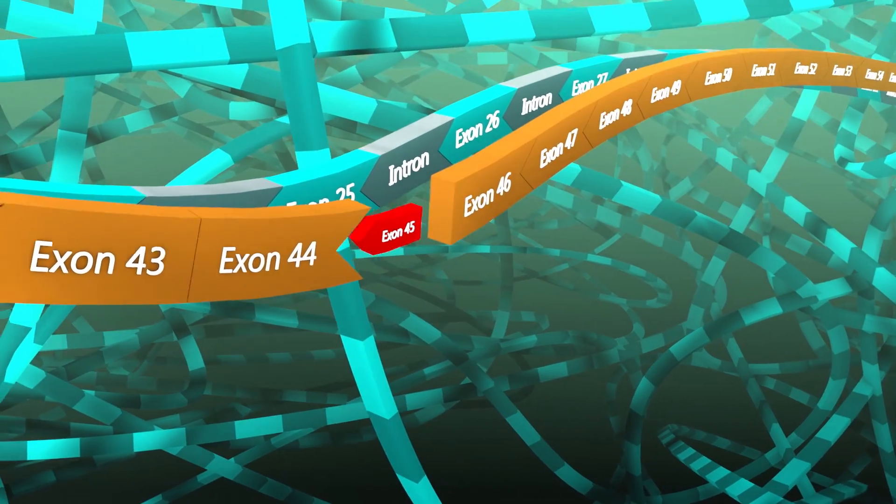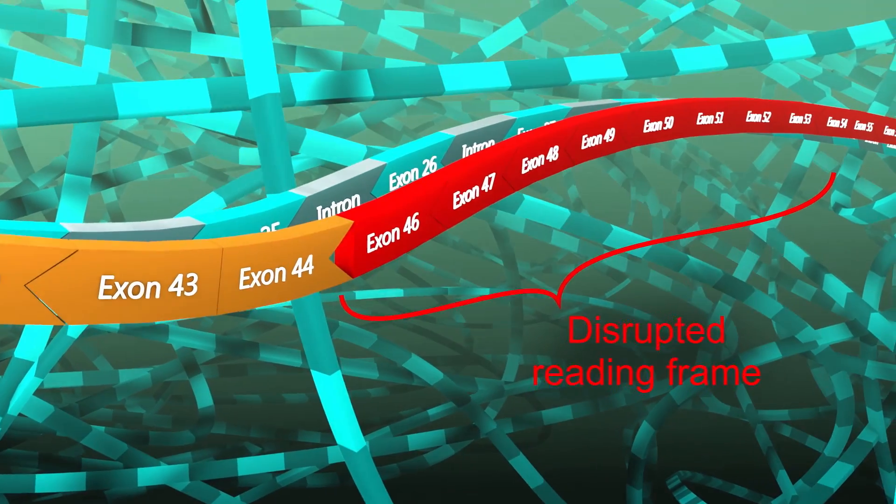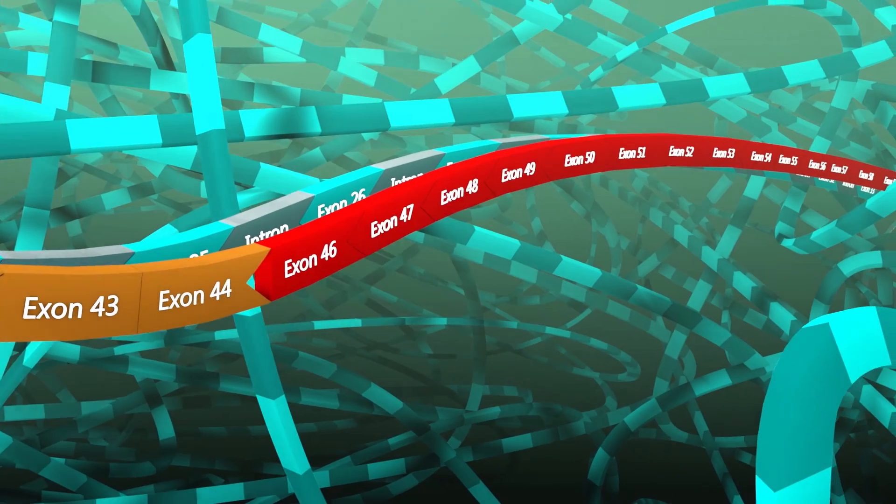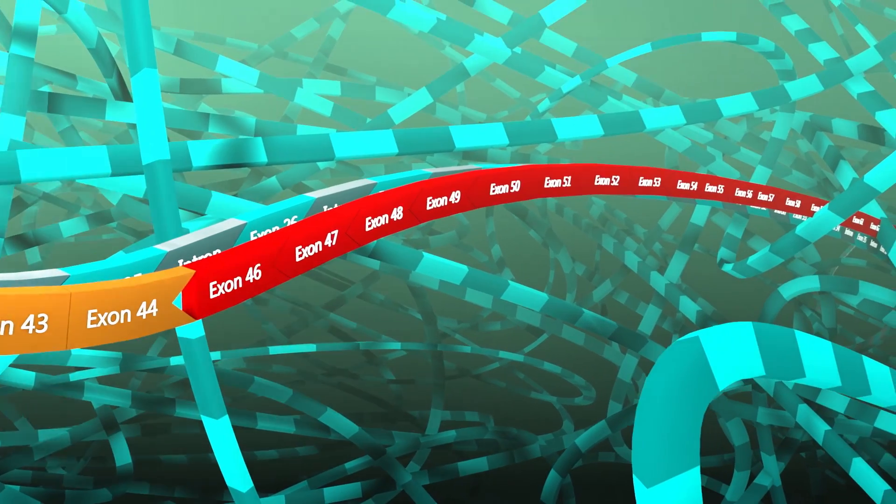A deletion in one exon can disrupt the reading frame, resulting in a premature halt in protein synthesis and preventing the production of a functional protein.